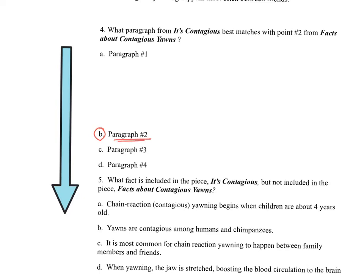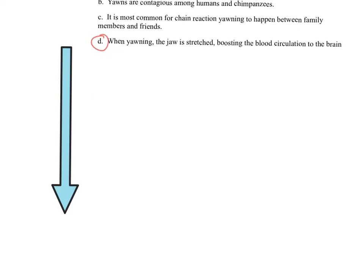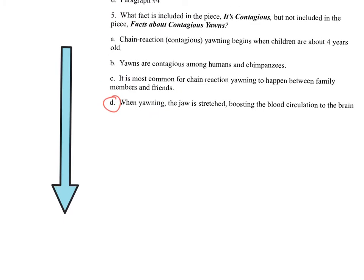In paragraph two we found information that best matches point two. Let's look at number five: what fact is included in 'It's Contagious' but not in 'Facts About Contagious Yawns'? Since you can't go back to the text on this one, the best answer is D — 'When yawning, the jaw is stretched, boosting the blood circulation to the brain.' Many of you chose D when solving this independently. Good job reviewing the best answers to our independent practice from Tuesday.